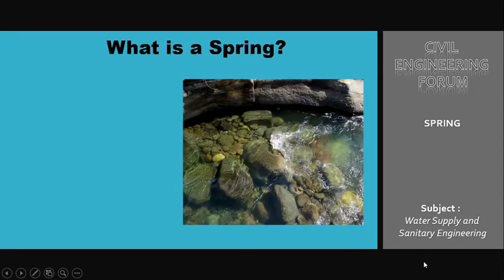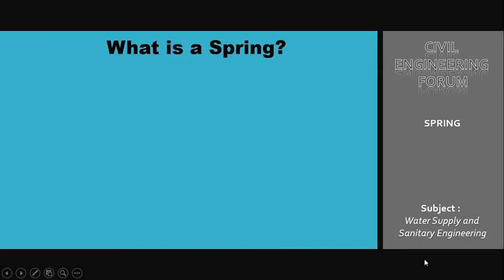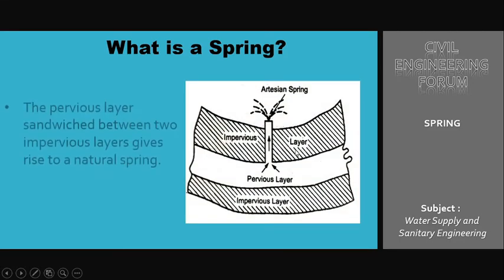The natural outflow of groundwater on the surface of the earth is known as a spring. Here I have shown a real photograph of a spring — this is one of the very common types, where groundwater naturally comes on the surface of the earth and gets accumulated or starts flowing. The key question is: why does this groundwater start to flow on the surface of the earth?